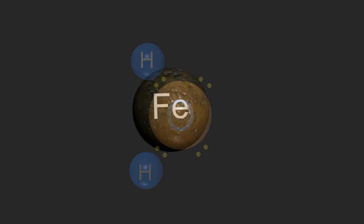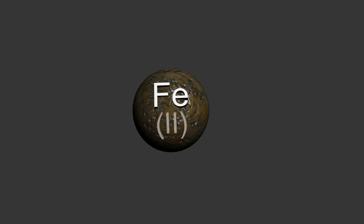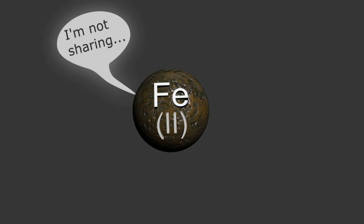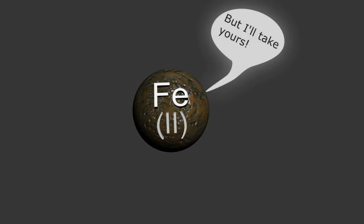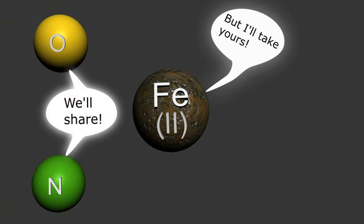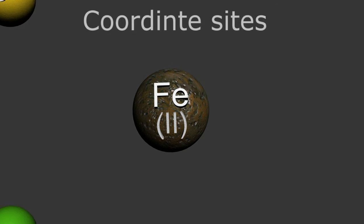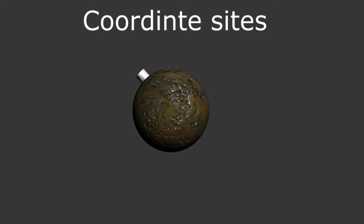However, metal atoms have already given up some electrons to become positively charged metal cations, and in the process become very electron selfish — unwilling to share their valence electrons with fellow atoms, but more than willing to take electrons from other atoms, most notably oxygen and nitrogen. They receive these electrons at what we call coordinate sites, of which iron has six.